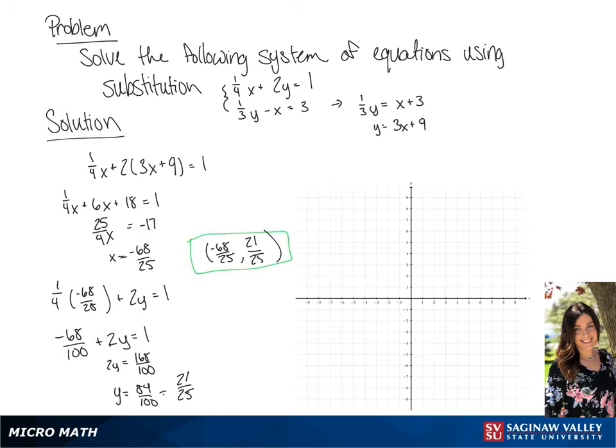Now we're going to graph these two equations. We'll see the y-intercept in the second equation is 9 and the slope is 3, so we will use that to plot the line.